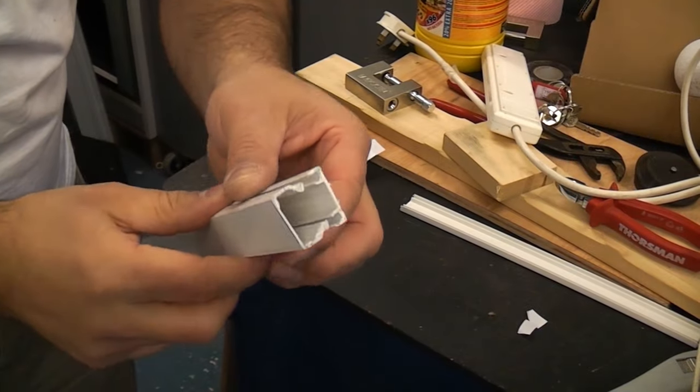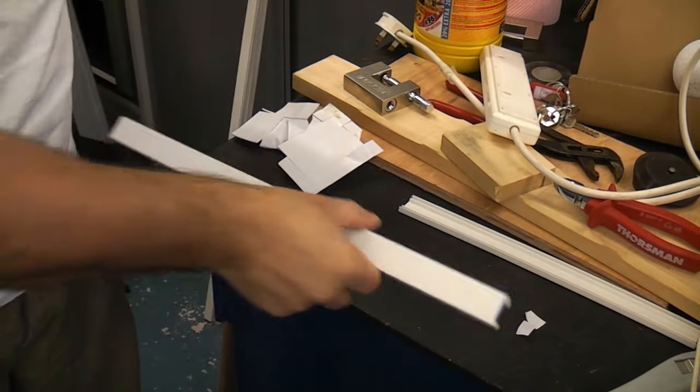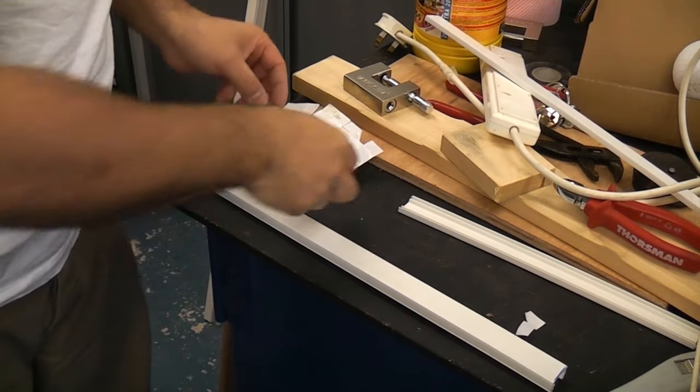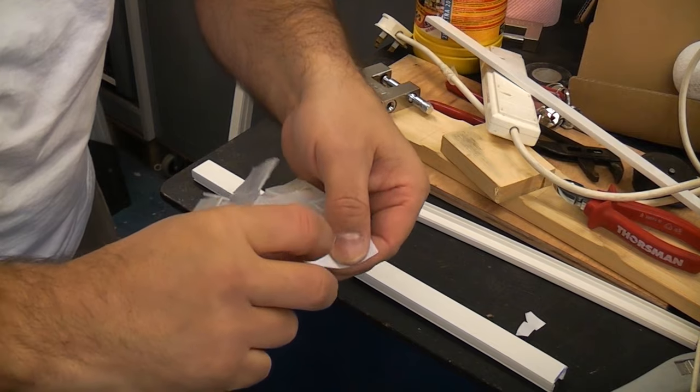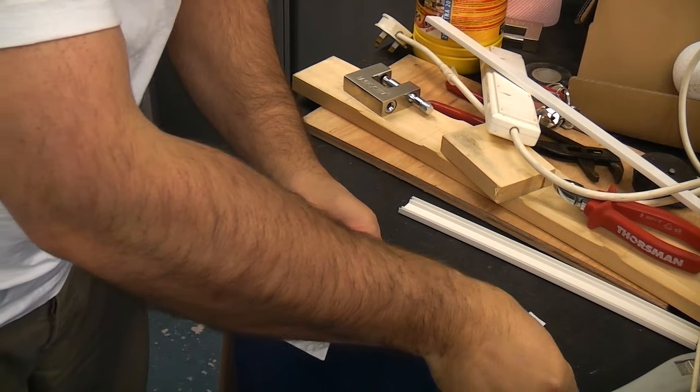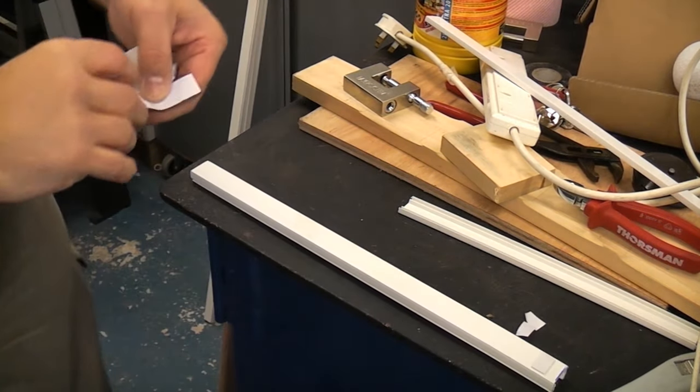So we're going to start off by separating the cover from the trunking. I'm just going to put that down. We're going to get some self-adhesive pads which are sticky on both sides. Stick one on each end of the trunking.